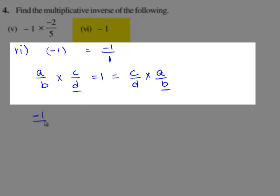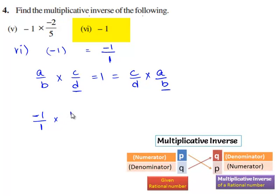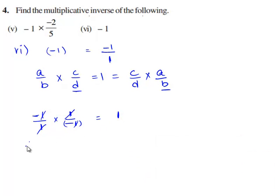Now, consider minus 1 by 1. Let us multiply this rational number with 1 by minus 1. So, we have the common factors 1 gets cancelled and minus 1 times minus 1 gives 1.